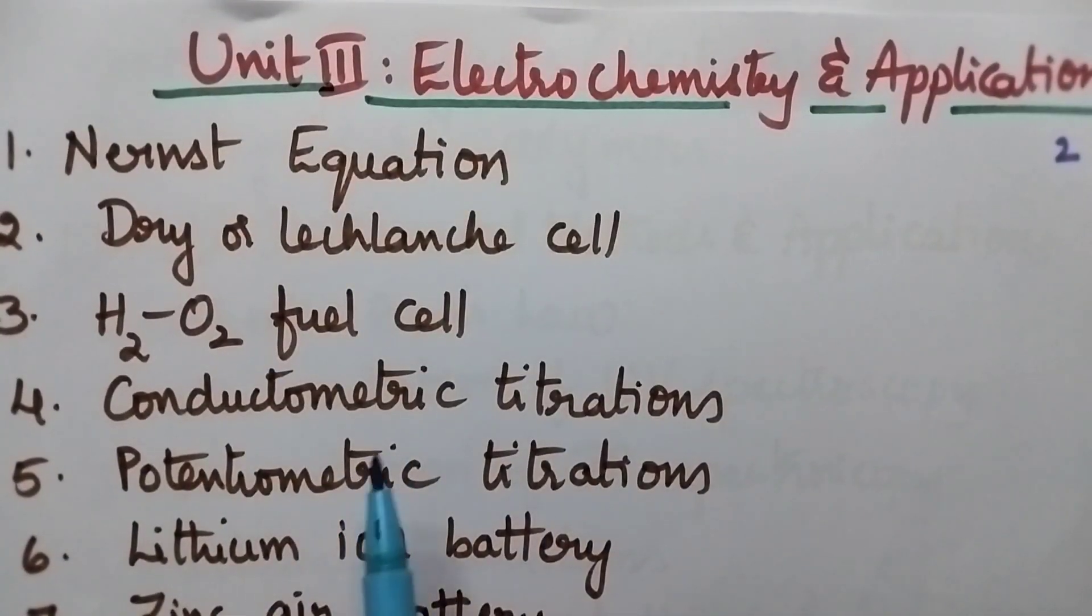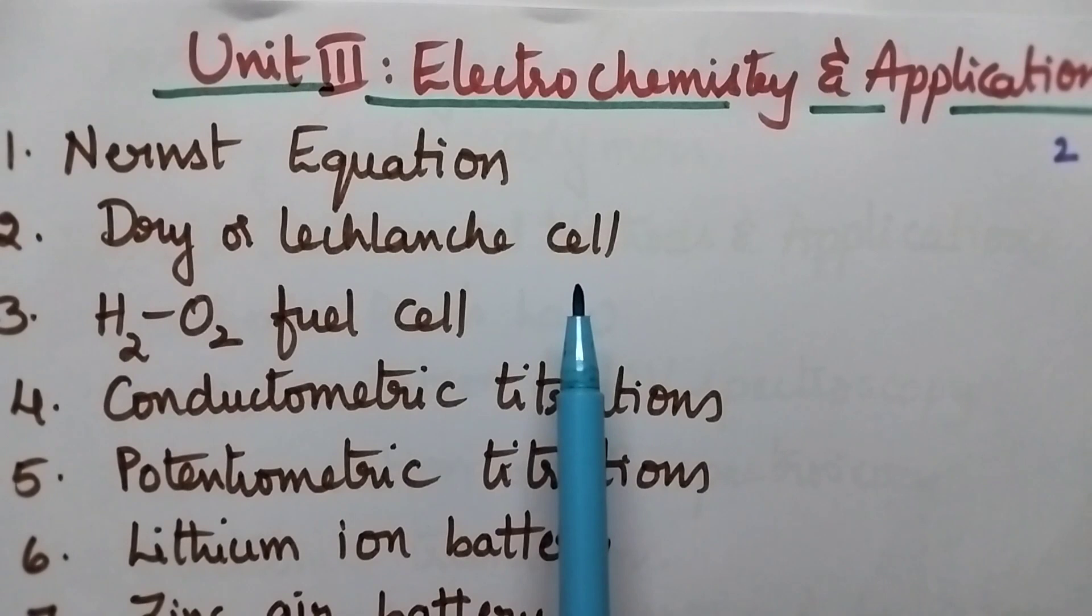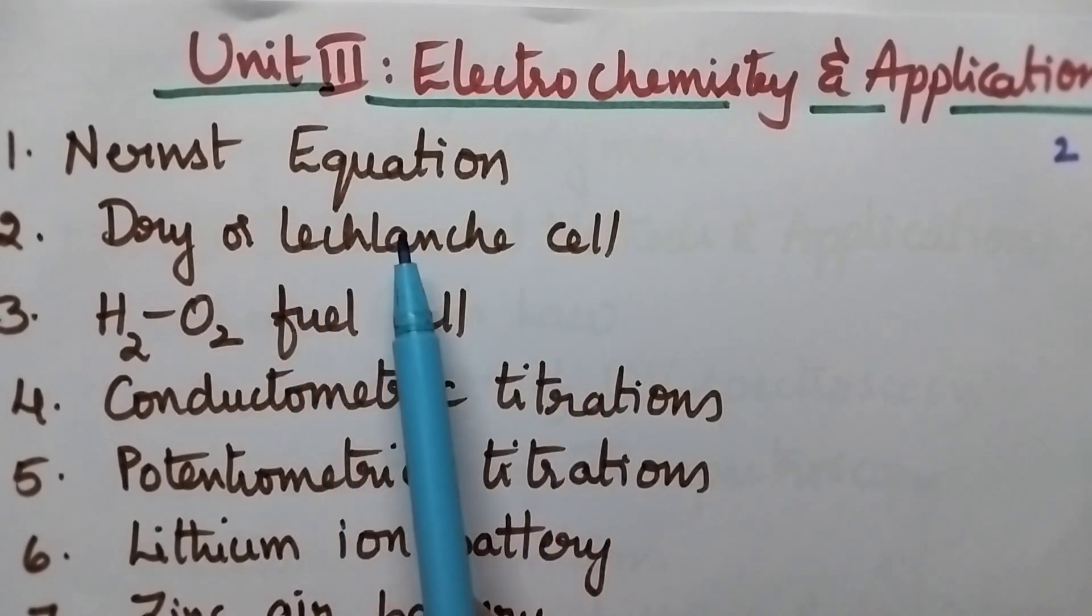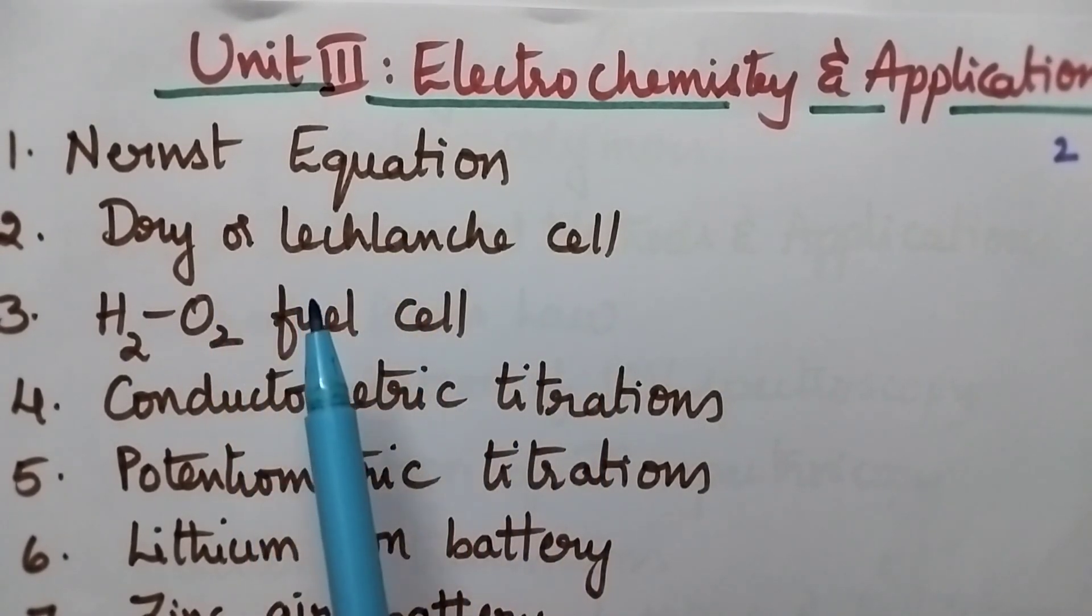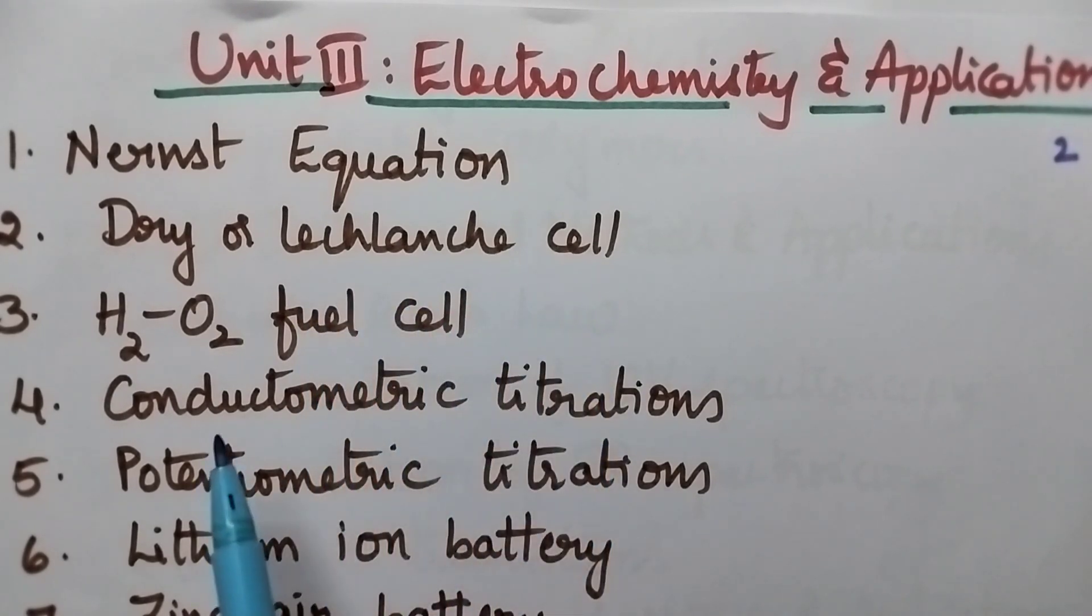Coming to unit 3, it is called as electrochemistry and applications. First question, Nernst equation. Second one is dry or Leclanche cell. Third question is hydrogen oxygen fuel cell.